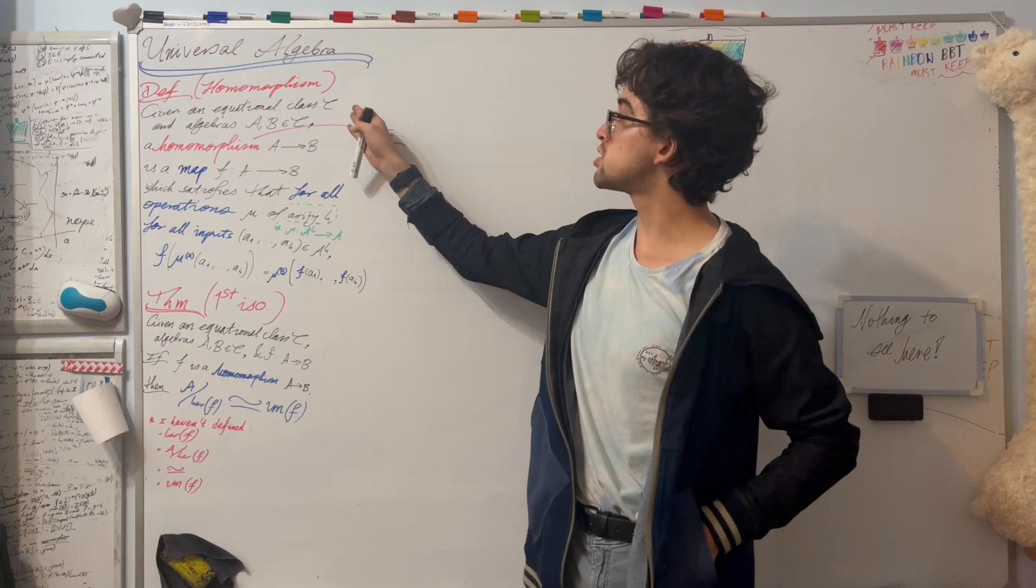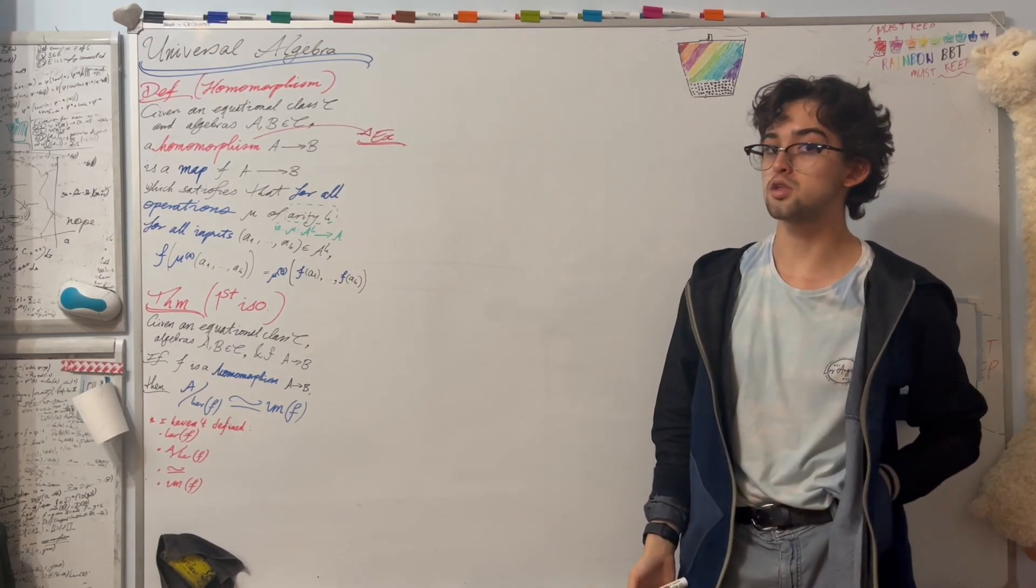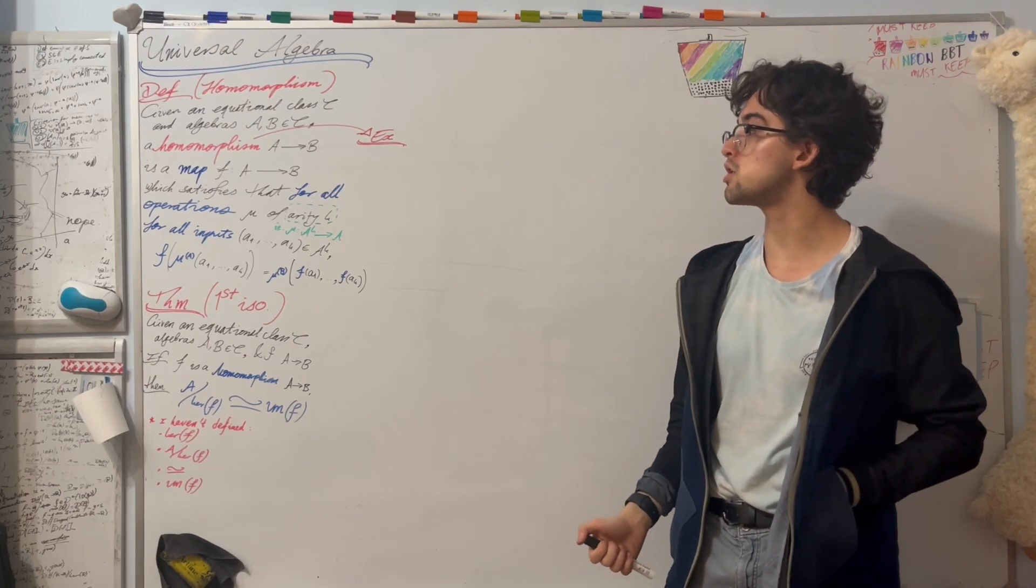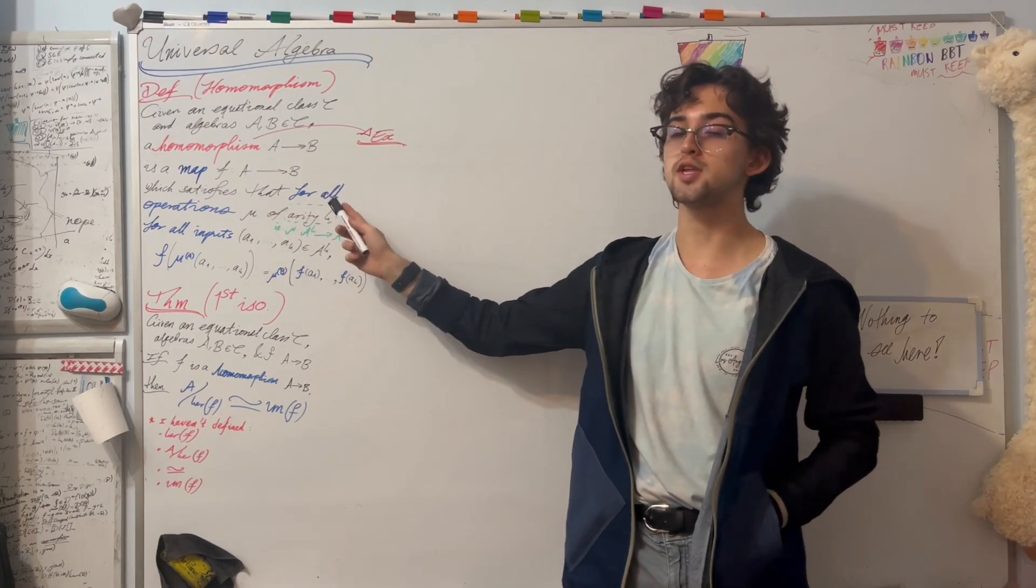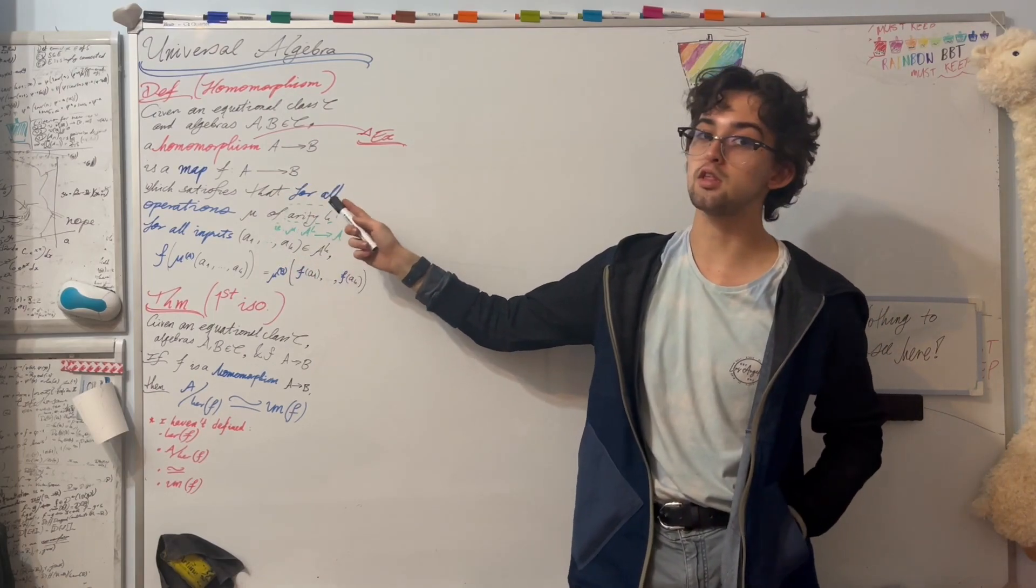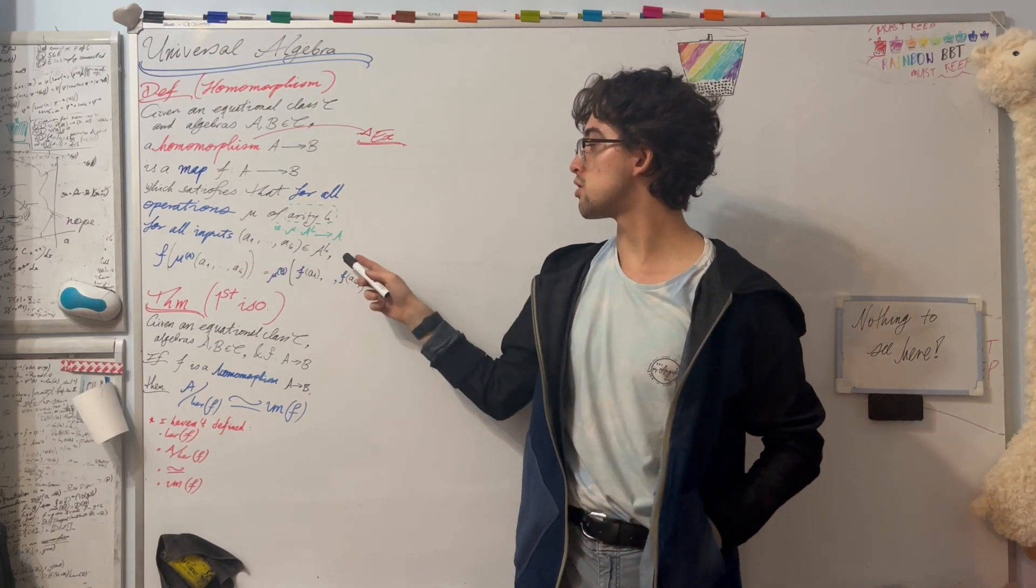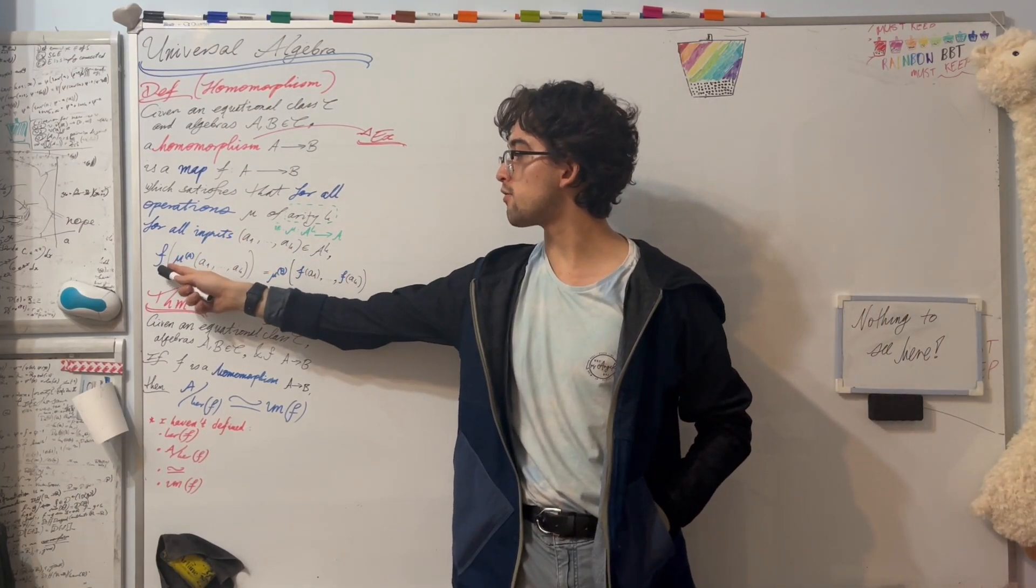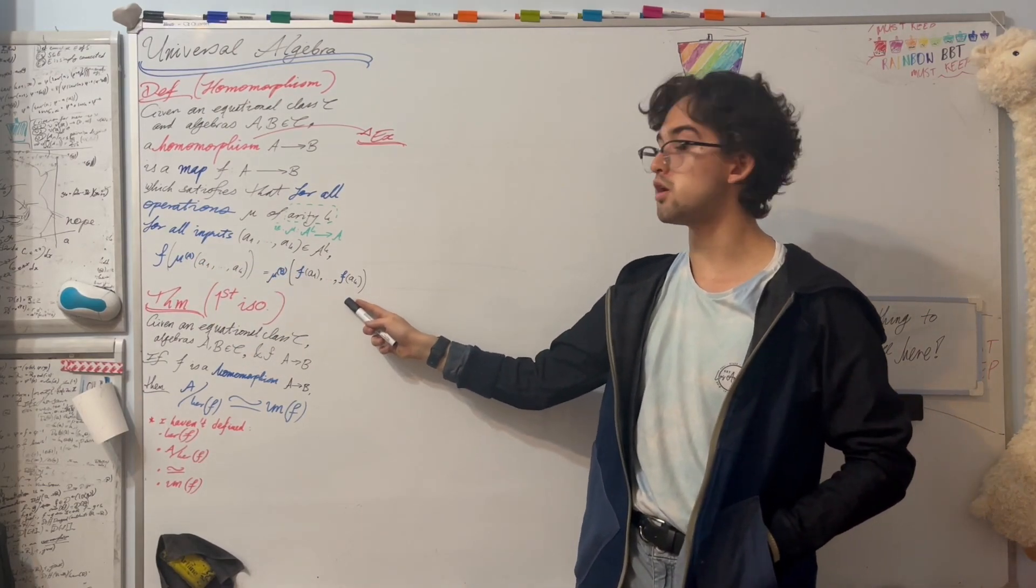So to pin down at least some of the terms here, given an equational class c and algebras a, b, and c, a homomorphism from a to b is just a map f from a to b, such that for any operation mu of arity k, meaning that it takes a^k back to a, and any inputs in a^k, we have that f applied at mu is the same thing as mu applied at f.